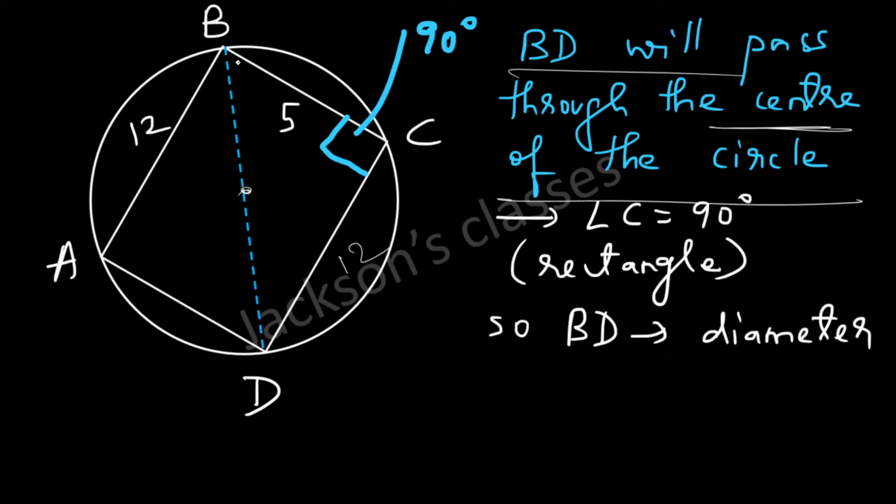So as per Pythagoras theorem, BD will be equal to 13, or it will be square root of 12² plus 5² which is equal to 13. Now you can do this fast if you remember that 5, 12, and 13 are a Pythagorean triplet.